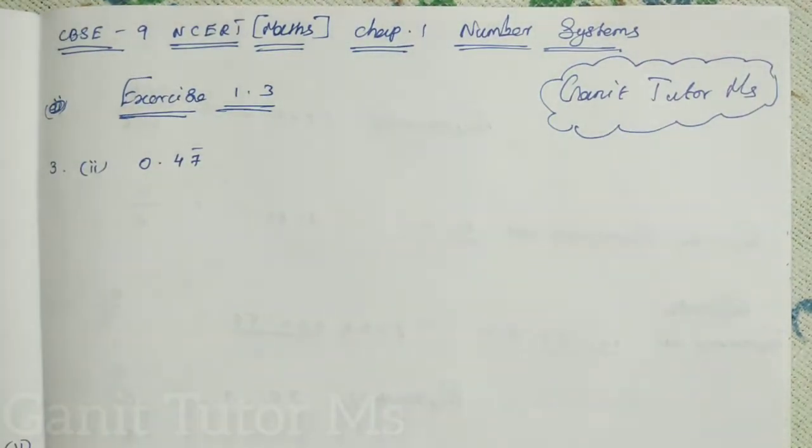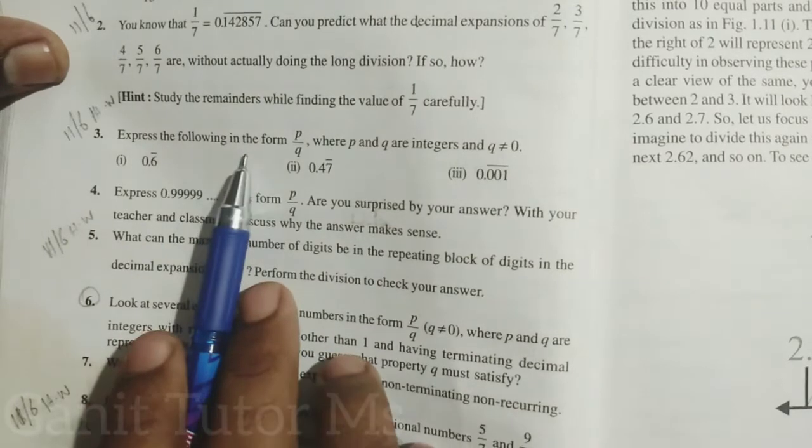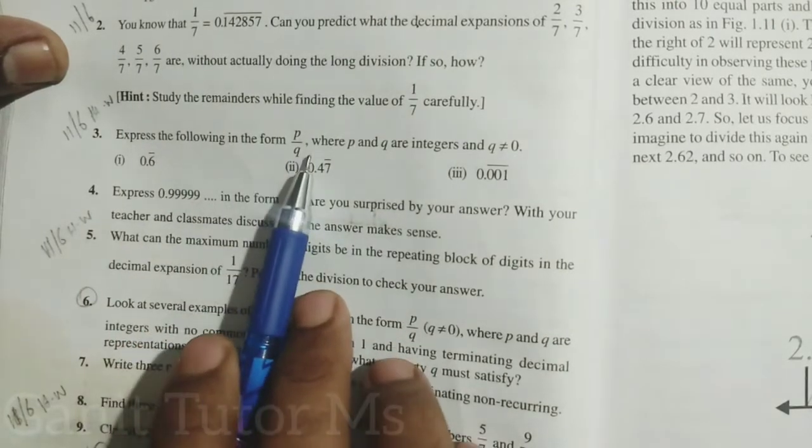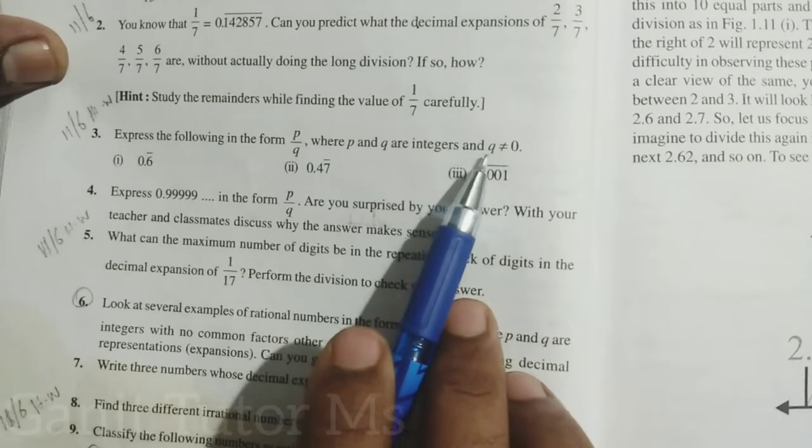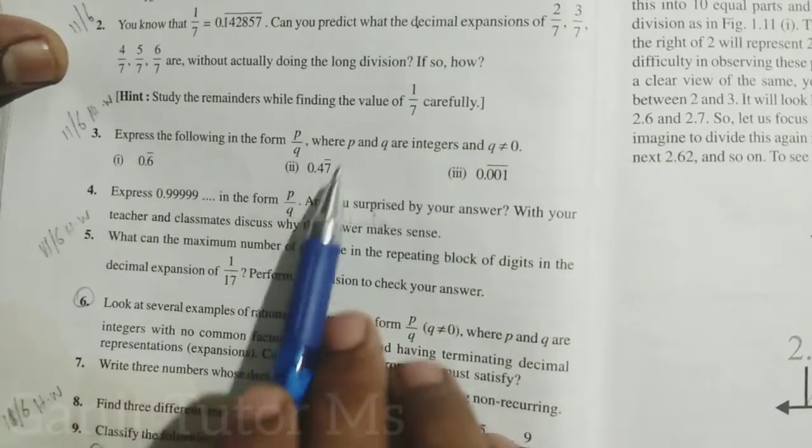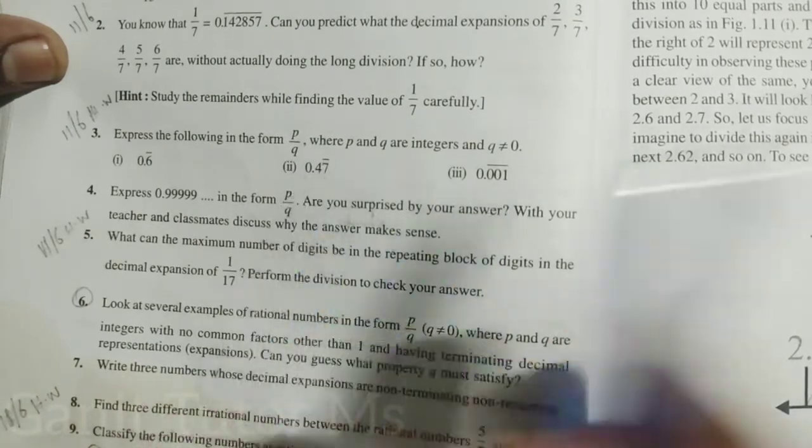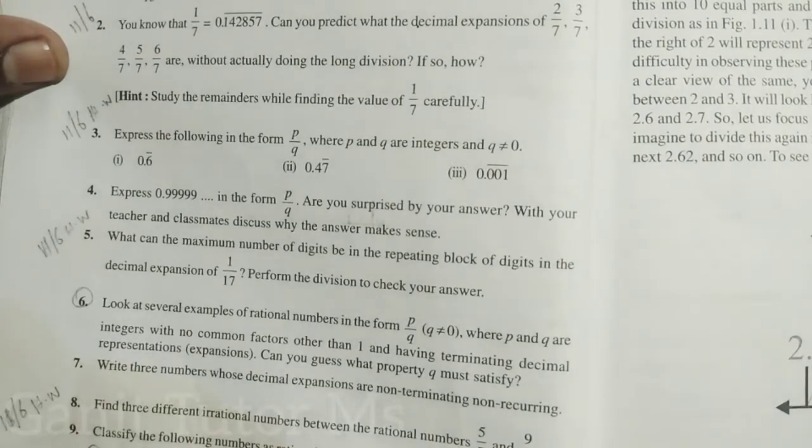Actually what they given in this problem, express the following in the form P by Q, where P and Q are integers and Q not equal to zero. Here they given a decimal expansion. Now we can convert this decimal expansion into P by Q form, clear?